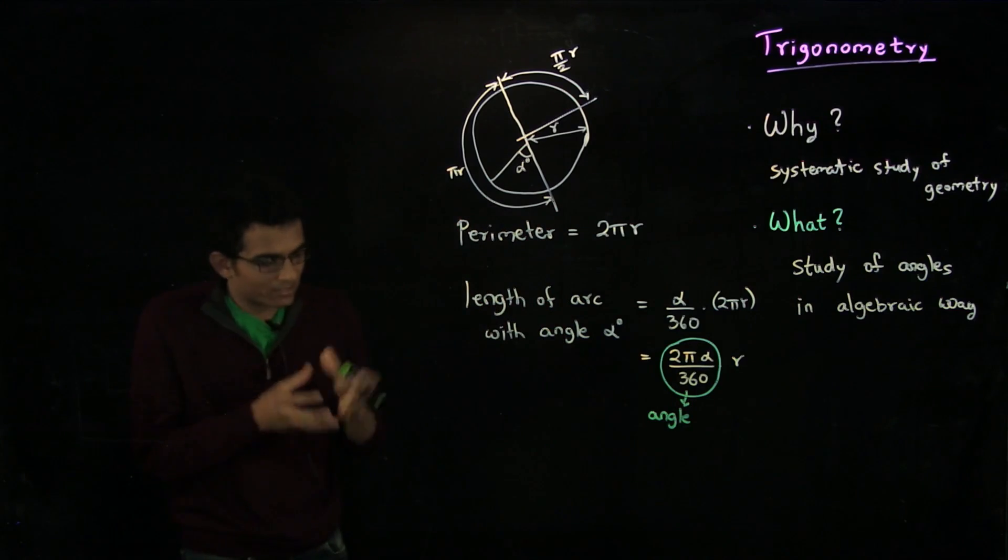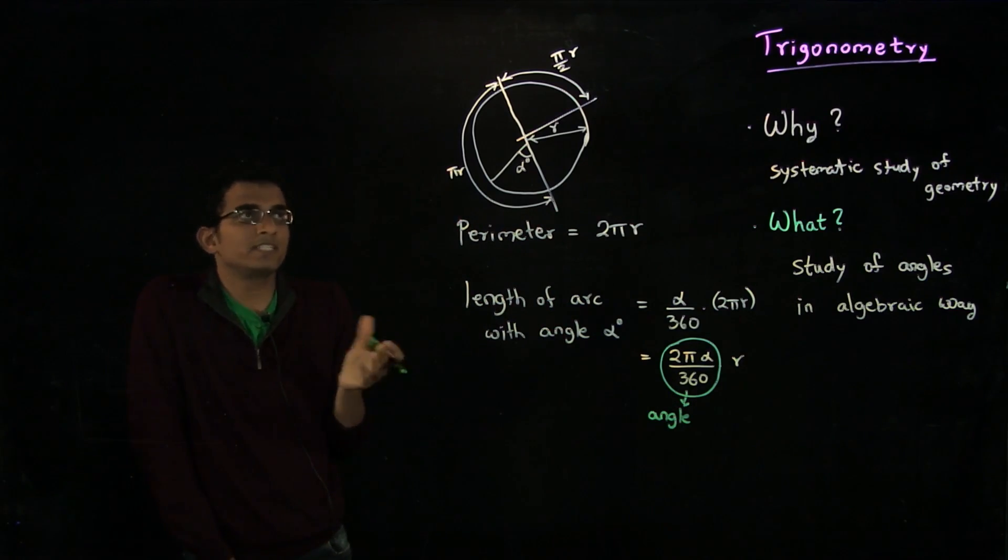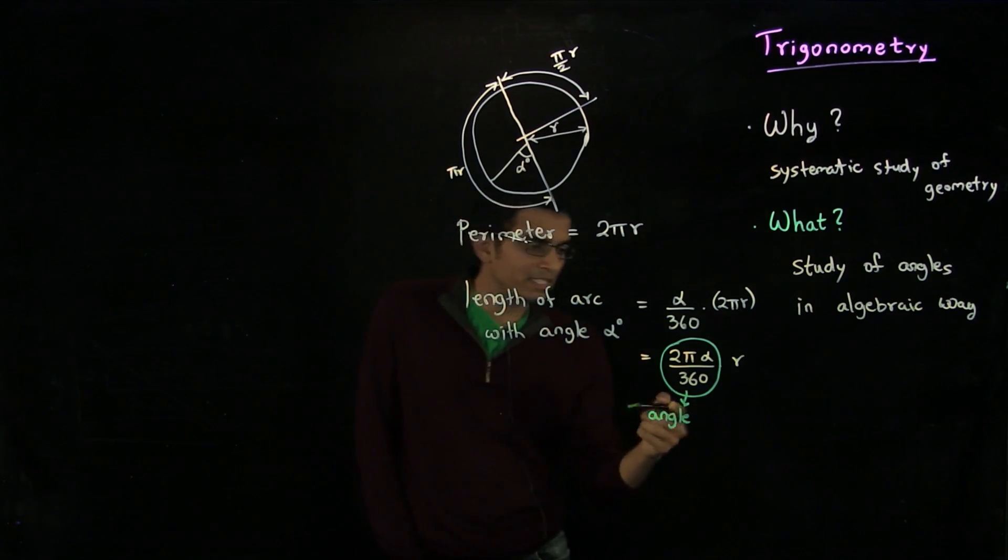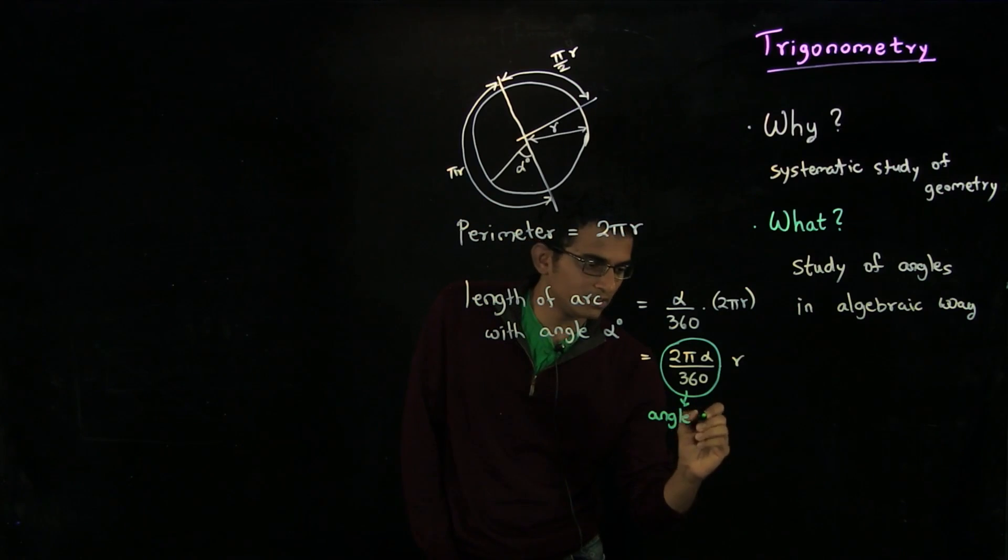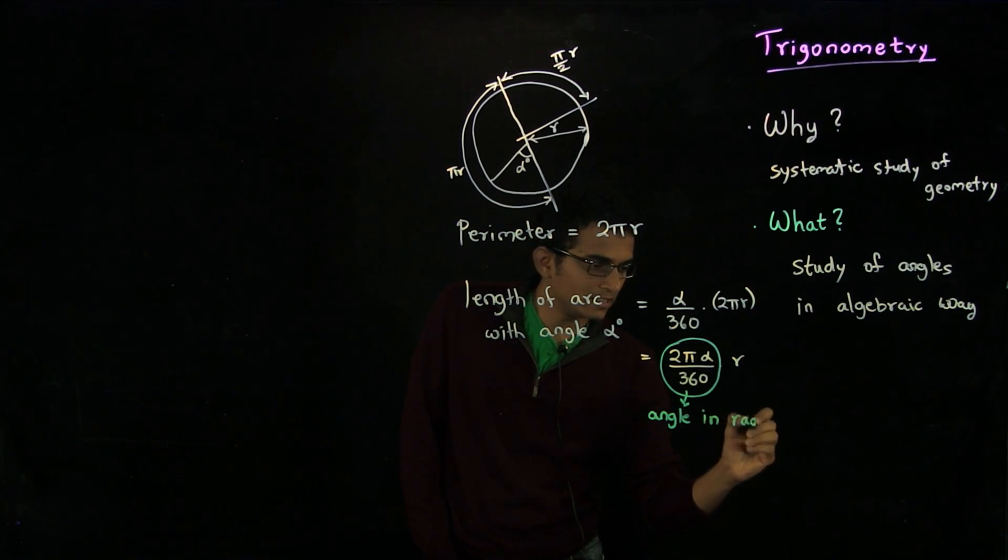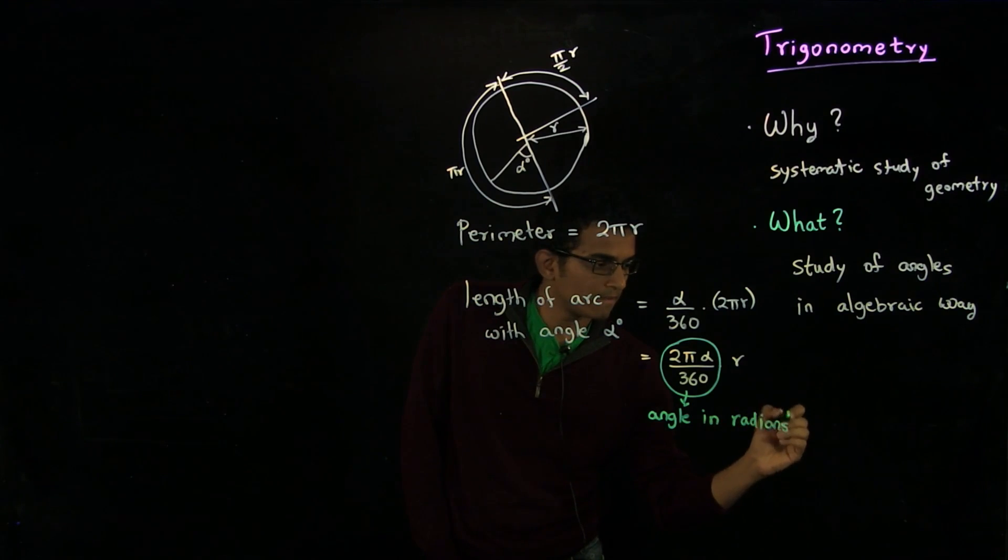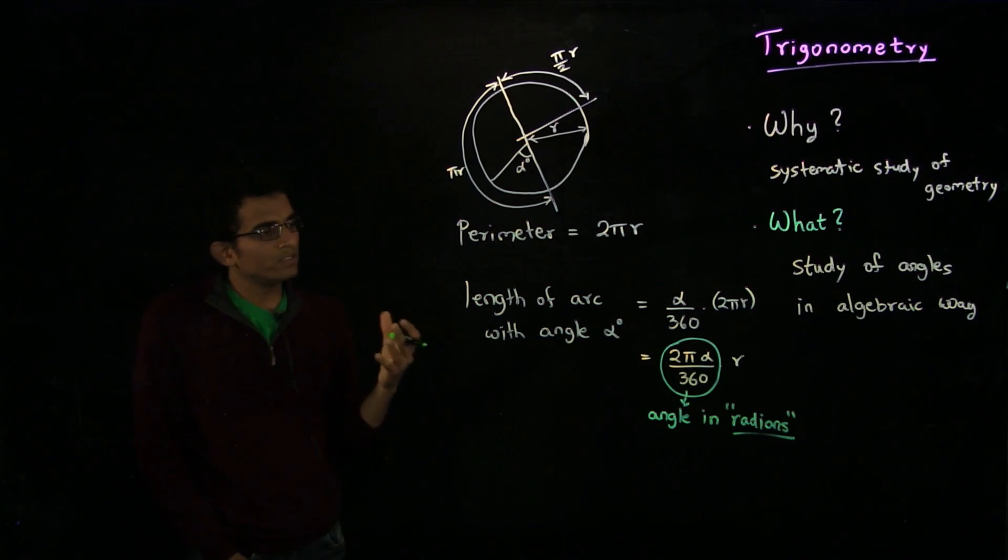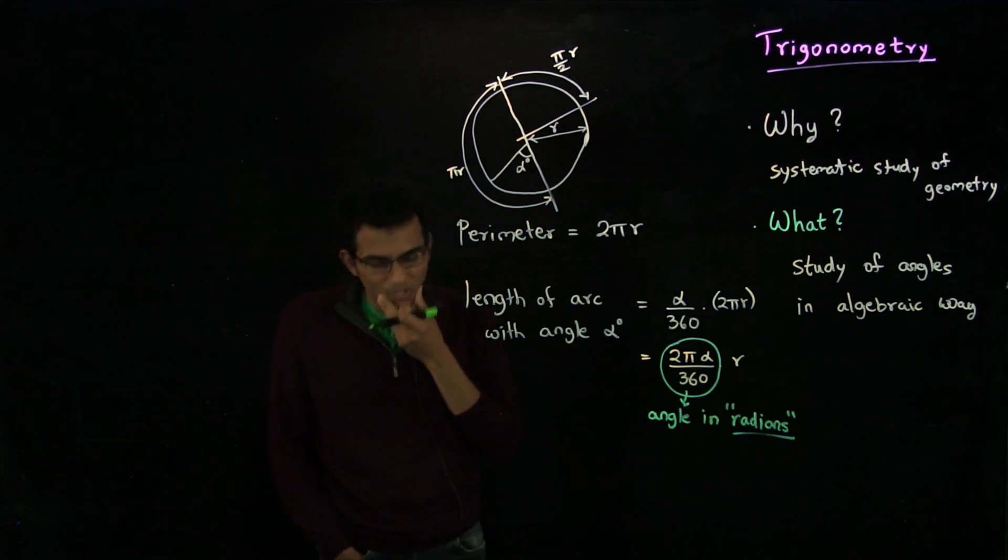As there are different ways to measure objects like length, you measure it in meters and inches and so on. Similarly, this is a different unit of measuring angles. This is angle in radians. And thinking in terms of radians is very important.